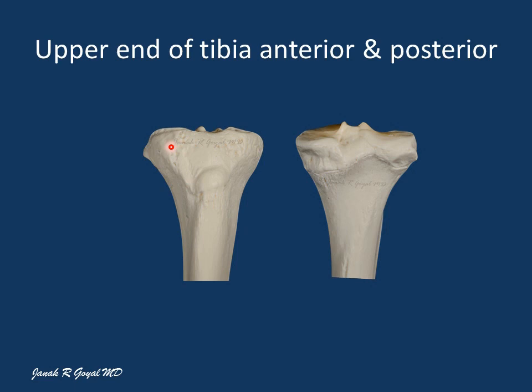Anteriorly, a roughened area of the condyles is continuous below with the tibial tuberosity. On the posterior lateral surface of the lateral condyle of tibia there is a flat facet for articulation with the head of fibula. On the posterior medial aspect of the medial condyle of tibia there is a groove for the attachment of the tendon of semimembranosus.